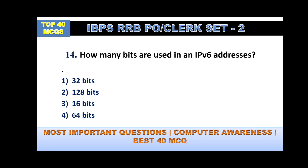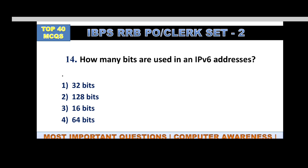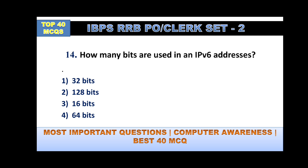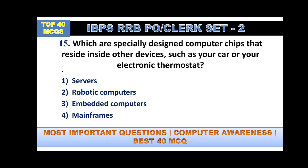How many bits are used in IPv6 addresses? In computer networking there are two addresses: IPv4 and IPv6. In IPv4 we use 32 bits, and in IPv6 we use 128 bits. Which are special design computer chips that reside inside other devices such as your car or electronic thermostat? These are embedded computers.